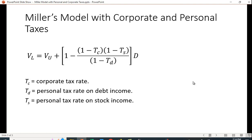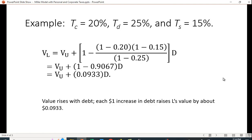Let's take a look at an example here. Suppose the corporate rate is 20%, the rate on debt for a person is 25%, and the rate on income for stock is 15%. If we work this out, we get that this factor here, instead of it being T times D which would have been 20% times D, it's 0.0933 times D, about 9.33%. So every dollar increase in debt raises the leveraged firm's value by 9.33 cents.